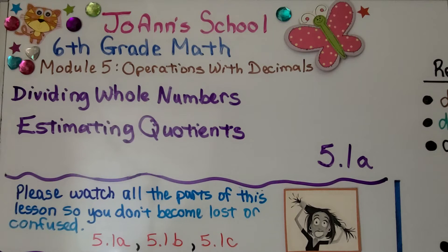We're in Module 5 now about operations with decimals, and we're going to talk about division first. This is 5.1a, Estimating Quotients.